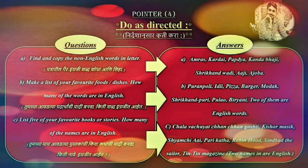Second: Make a list of your favorite foods or dishes. How many of the words are in English? The list of favorite foods — two of them are English words. Last: List five of your favorite books or stories. How many of the names are in English?